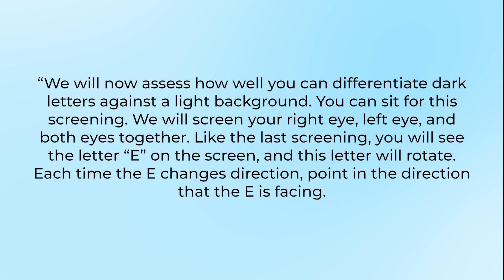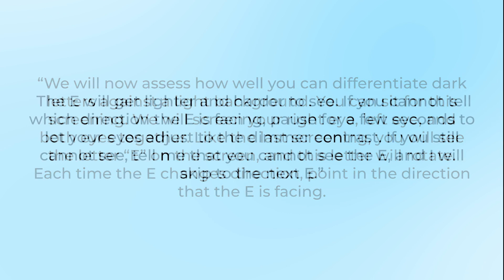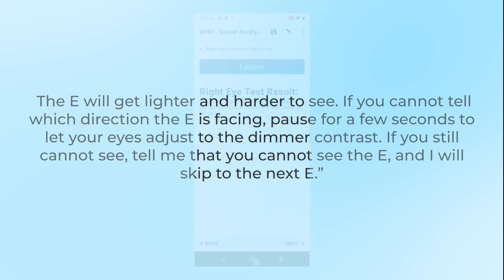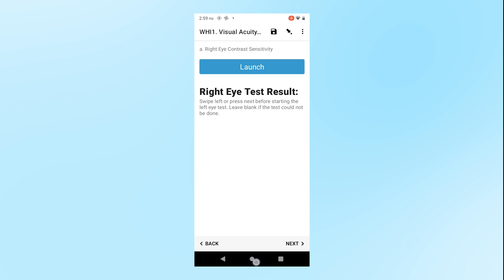Like the last screening, you will see the letter E on the screen, and this letter will rotate. Each time the E changes direction, point in the direction that the E is facing. The E will get lighter and harder to see. If you cannot tell which direction the E is facing, pause for a few seconds to let your eyes adjust to the dimmer contrast. If you still cannot see, tell me that you cannot see the E, and I will skip to the next E.